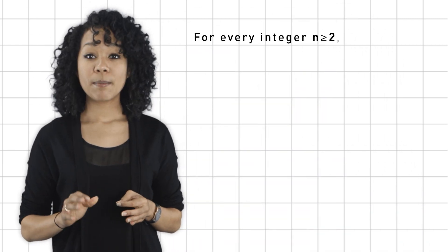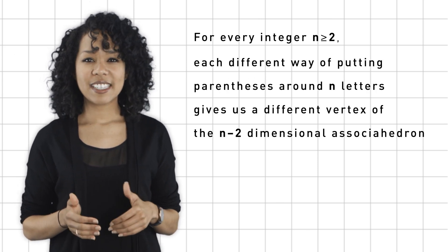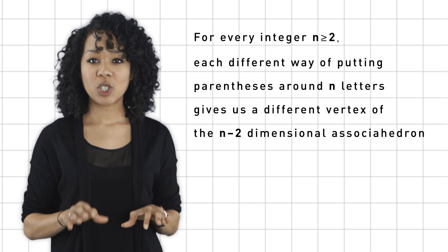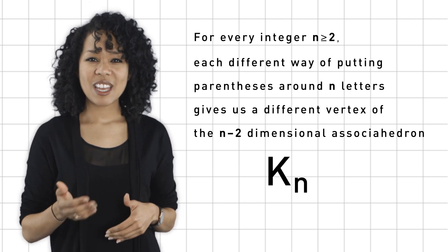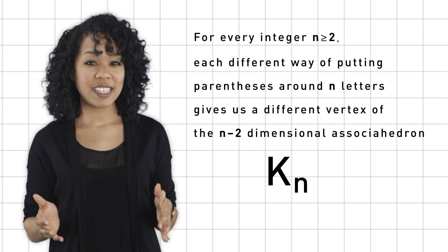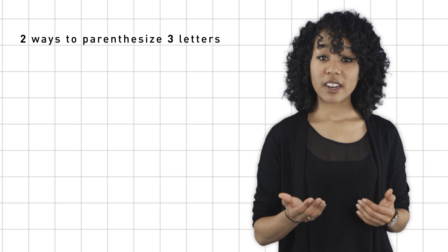For every integer n bigger than or equal to 2, each different way of putting parentheses around n letters gives us a different vertex of the n minus 2 dimensional associahedron, usually called Kn. And when n equals 2, there's only one way to put parentheses around two letters, so we get a point called K2. And there are two ways to parenthesize three letters, five ways to parenthesize four letters.